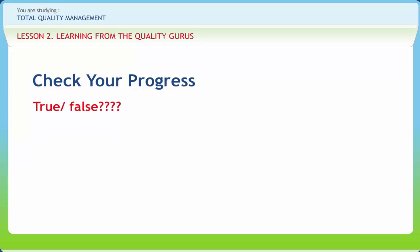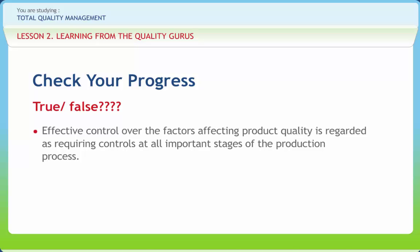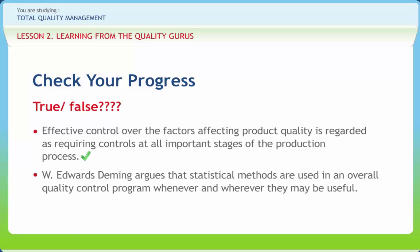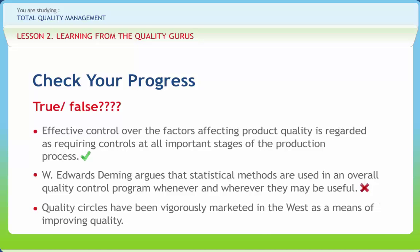Now let us check if we have understood the various concepts discussed in this lesson. Effective control over the factors affecting product quality requires controls at all important stages of the production process — Right. W. Edward Deming argues that statistical methods are used in an overall quality control program whenever and wherever they may be useful — Wrong. Quality circles have been vigorously marketed in the West as a means of improving quality — Right.